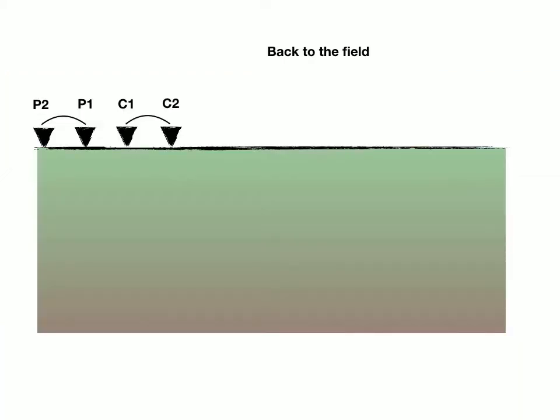Okay, to go back to the field now for a second on what we actually did, we had four electrodes in the ground at a time. Two were potential, P1 and P2, measuring the potential along here. Two were C1 and C2, putting a current into the ground.